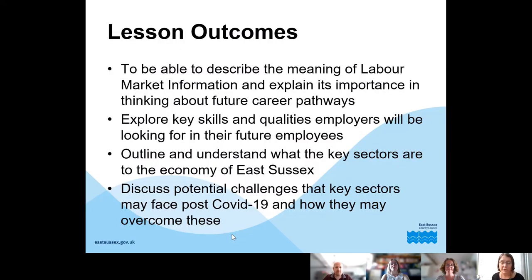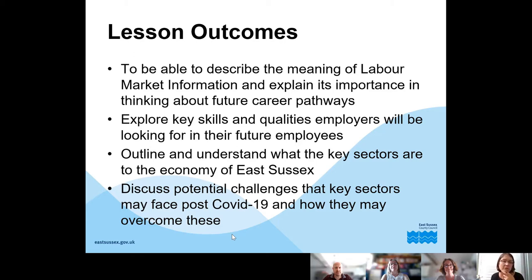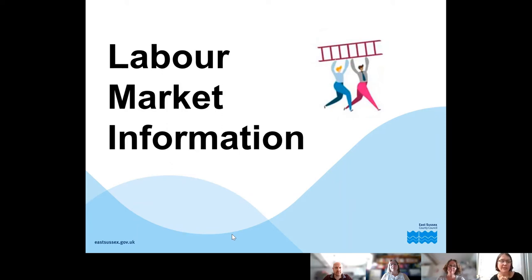The lesson outcomes are: to be able to describe the meaning of labour market information and explain its importance in thinking about future career pathways; exploring key skills and qualities employers will be looking for in their future employees. This is particularly important thinking about the stresses of the last couple of months during lockdown. This is a particularly good lesson to deliver in your first term back in September–October to get a feel of where your students are and help shape their future. The final outcome is to understand what the key sectors are to the economy of East Sussex and discuss potential challenges those key sectors may face.